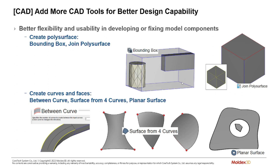We still have the extract centerline tool from the previous version which draws centerlines through a circular channel, but extracting surfaces directly allows us to model the cooling channels exactly as they were in the mold rather than as an approximation. We now have a bounding box feature to join poly surfaces within a given domain, and a join poly surfaces function to merge different geometries — more for surface-to-surface interaction rather than solid-to-solid.